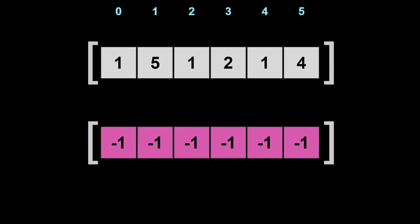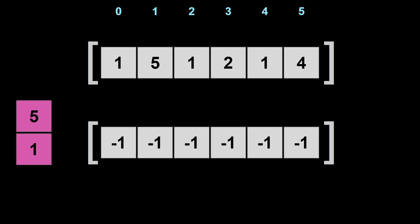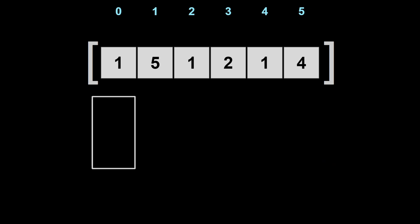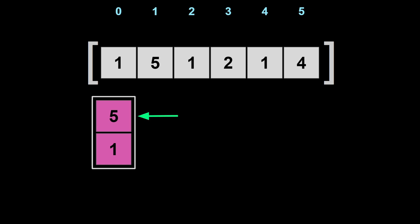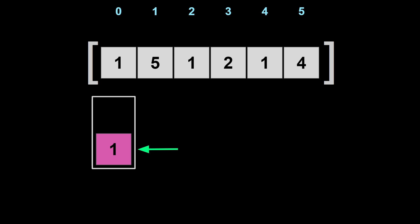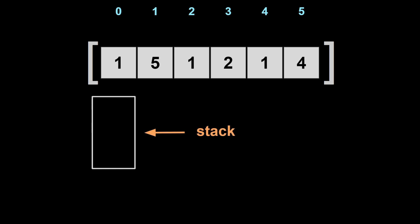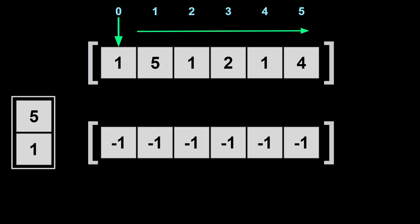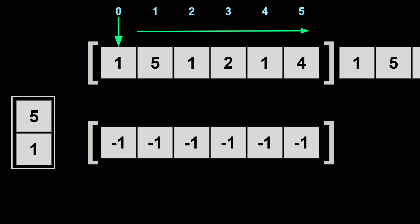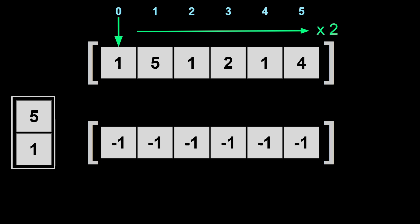To summarize: we need a result array initialized with -1, and a data structure to store information on the side. We stored positions, then compared the current element to the most recently stored one. Every time we removed an element, we removed the last one stored — that's LIFO: last in, first out. The classic data structure for this is a stack. Instead of physically appending the array to itself, we simply go through the array twice.